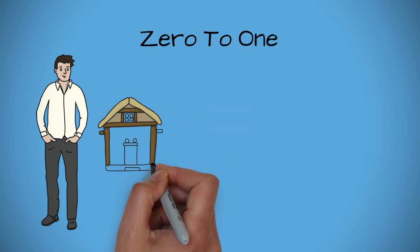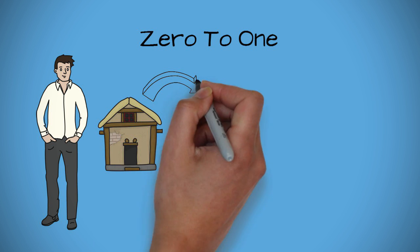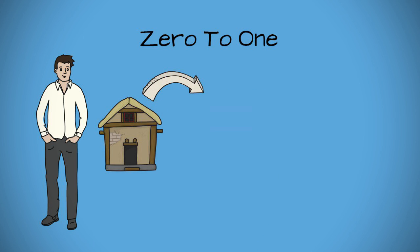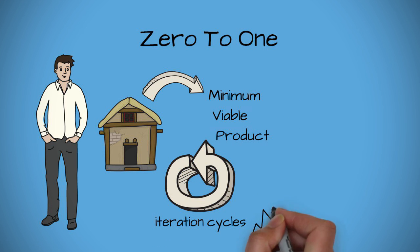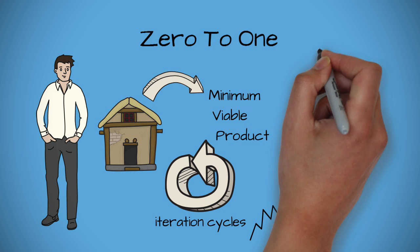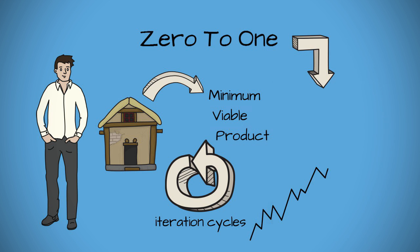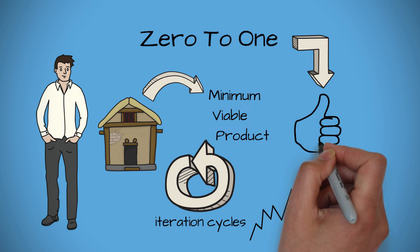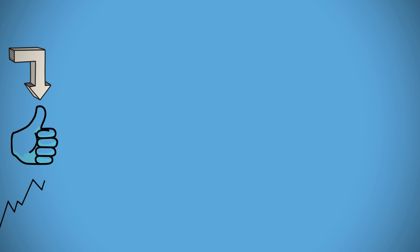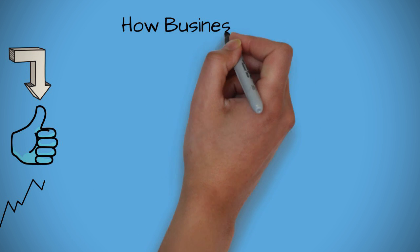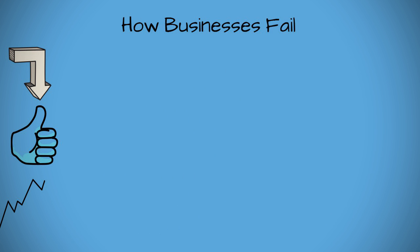This book is about how to create a successful startup, but unlike traditional business models that tell us to create a minimum viable product and then improve on it based on customer feedback, Zero to One tells us that in order to create an awesome business, we have to create something unique right from the start. First, we have to understand something that a lot of business owners fail to see, and that is how businesses fail.